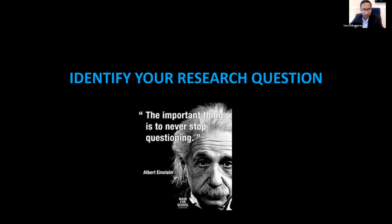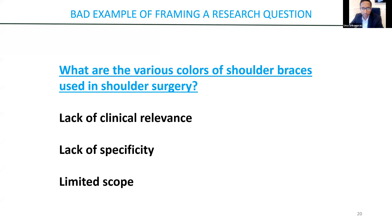Starting with identifying your research question — let's start with a bad example. 'What are various colors of shoulder braces used in shoulder surgery?' This isn't particularly interesting. It's fairly trivial, does not address any meaningful clinical outcomes, lacks specificity — it doesn't specify the type of shoulder surgery or the context in which the shoulder braces are being used. It's really limited in scope and wouldn't be very interesting to the people consuming this piece of literature.